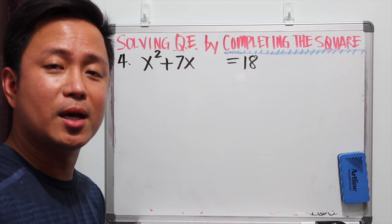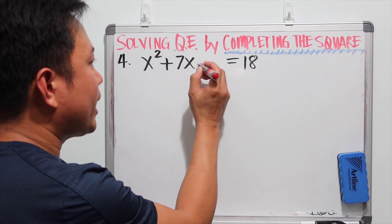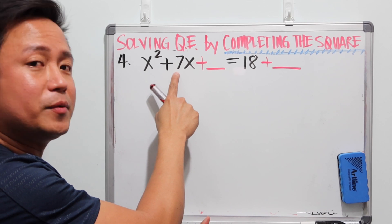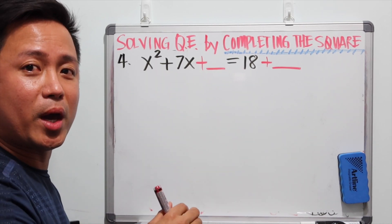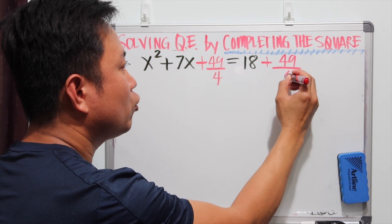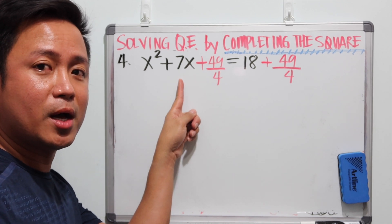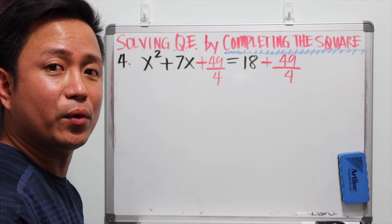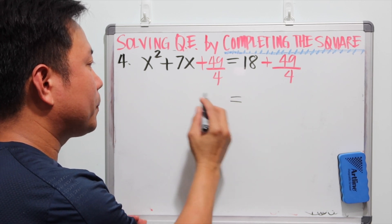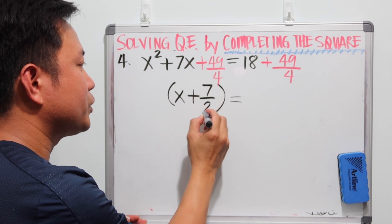Example number 4 is more challenging because it involves fractions when completing the square. To determine what to add to both sides, we get half of 7, which is 7 over 2, and then square it, giving 49 over 4. So we add 49 over 4 to both sides. This gives us x squared plus 7x plus 49 over 4, which is a perfect square trinomial, and that can be factored as x plus 7 over 2 to the second power.